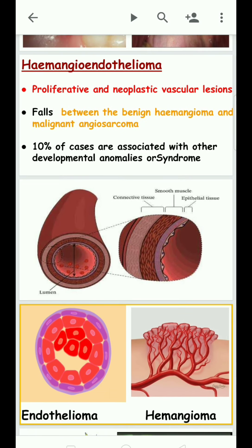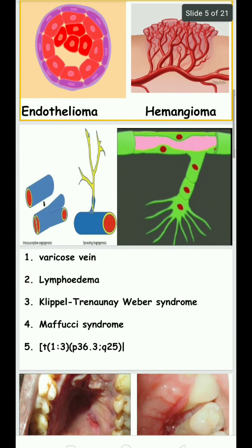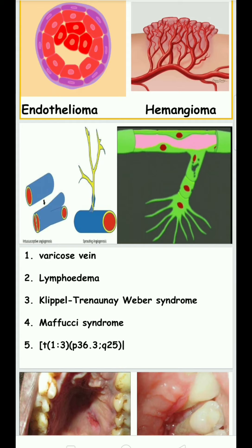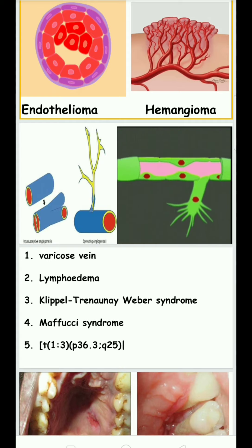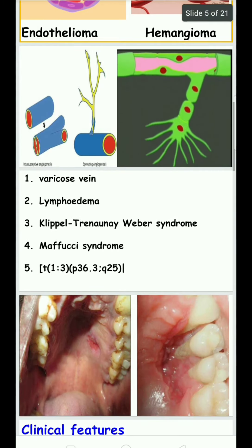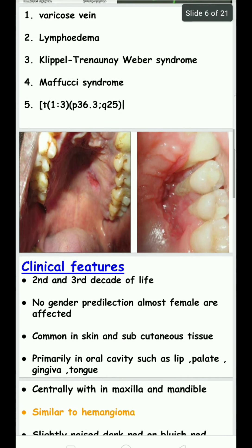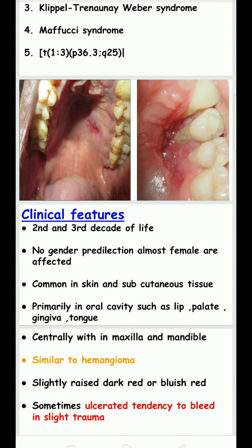Ten percent of cases are associated with other developmental anomalies or syndromes such as varicose vein, lymphedema, Klippel-Trenaunay-Weber syndrome, Maffucci syndrome, and chromosomal translocation. The second and third decades of life are most commonly affected, with no gender predilection.